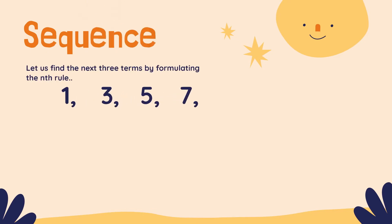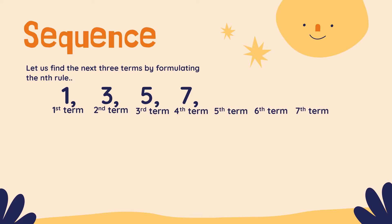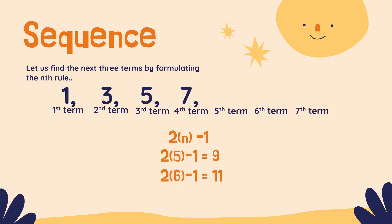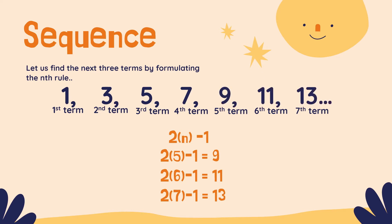Now, let's use the rule 2N minus 1 to get the next 3 terms. We are going to replace N by 5, 6, and 7. So: 2 times 5 is 10 minus 1 equals 9; 2 times 6 is 12 minus 1 equals 11; and 2 times 7 is 14 minus 1 equals 13. So the 5th term is 9, the 6th term is 11, and the 7th term is 13. The complete sequence is: 1, 3, 5, 7, 9, 11, 13. That's the correct sequence!